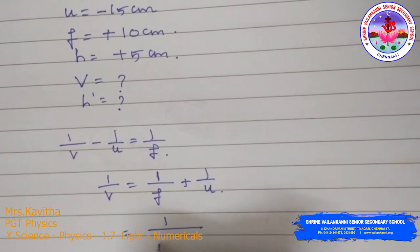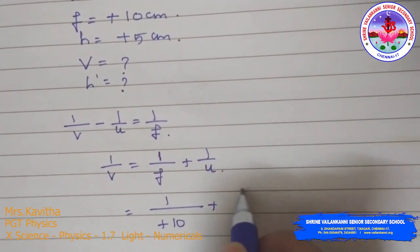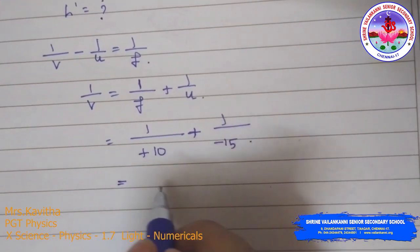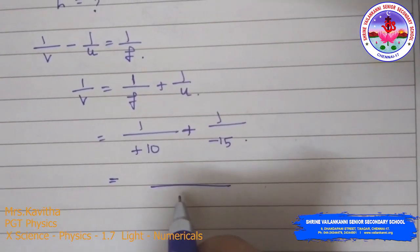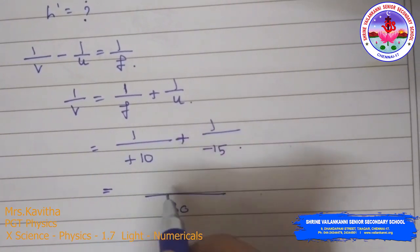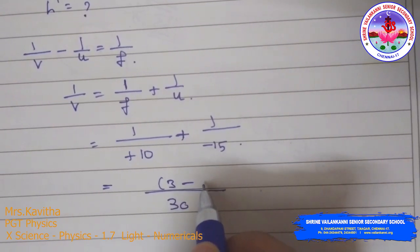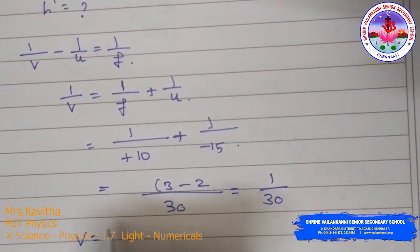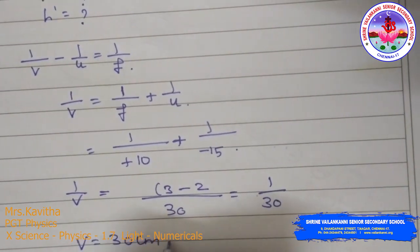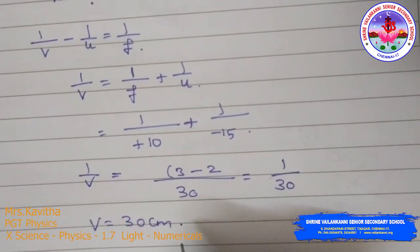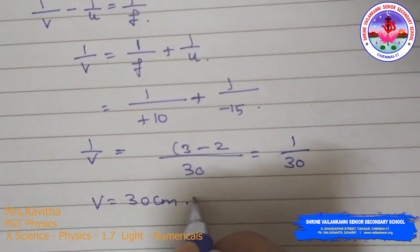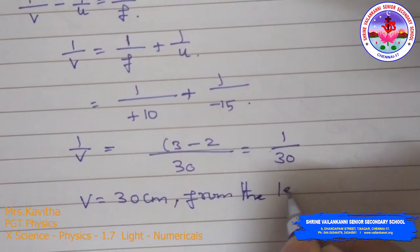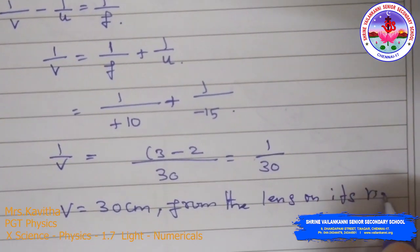Substituting: 1/V = 1/10 + 1/(−15). Taking LCM of 30: that gives (3 − 2)/30 = 1/30. So 1/V = 1/30, therefore V = 30 cm. The image is formed at a distance of 30 cm from the lens on its right side.